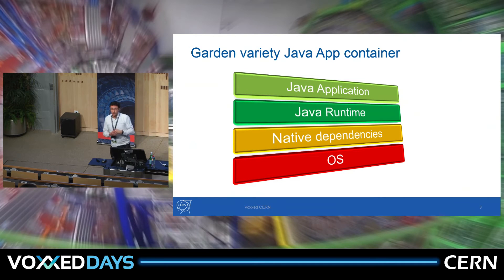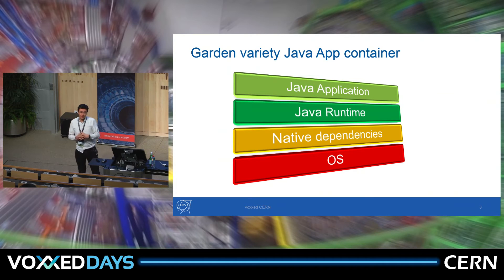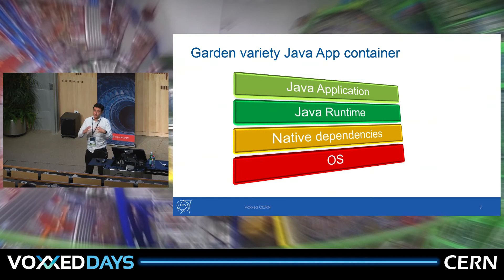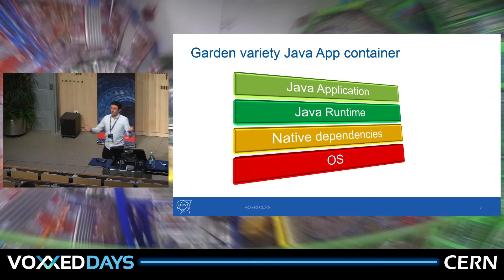Now, if you go on the internet and look around and find these base Java images, you'll see that they weigh way more than they should. The typical container size is going to be about 200 megabytes — 200 megabytes without even any of my code, just basic dependencies. And when I went to my sysadmin, I said, 'Look, I want to do Docker in production.' And he said, 'What's Docker?'